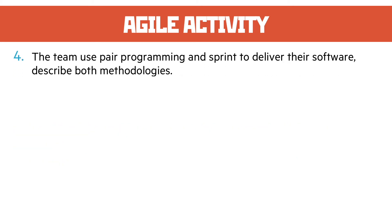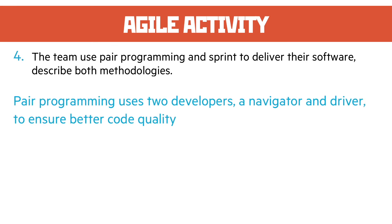Question four: the team use pair programming and sprints to deliver their software — describe both methodologies. Pair programming is where two developers code at the same time: you have somebody watching called a navigator and somebody actually doing the typing, the driver. Two pairs of eyes on code are better than one — they can discuss methodologies, the navigator can spot problems as the driver is coding, and as a result you get a better quality of code.